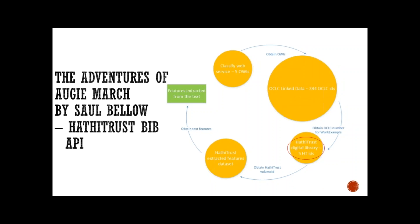Each OCLC number may then be checked against the HathiTrust BIB API to determine if HathiTrust has one or more digital files, or essentially items, of that manifestation. Full metadata may be extracted for each available manifestation and available digital copies in JSON. Additional selection criteria may be taken into account programmatically at this stage, such as whether the manifestation is English language or whether it is fiction or non-fiction.